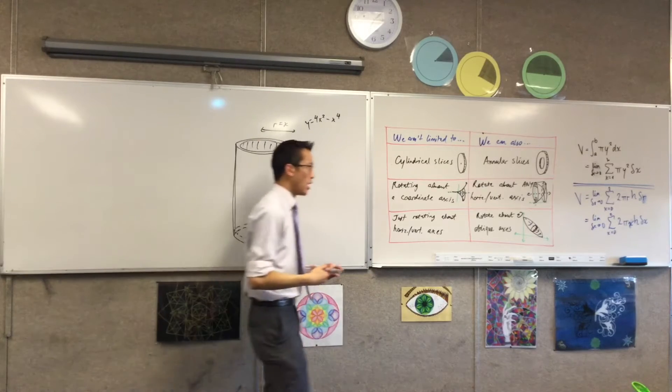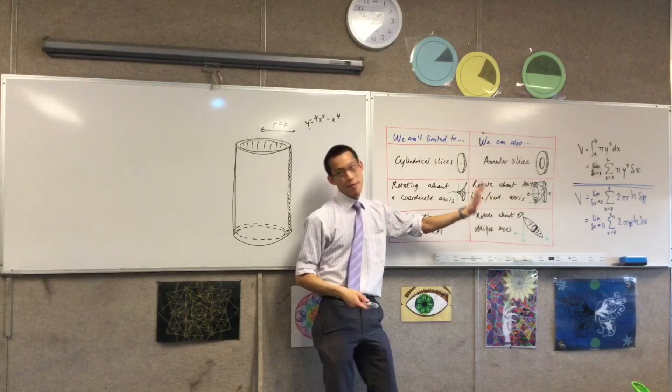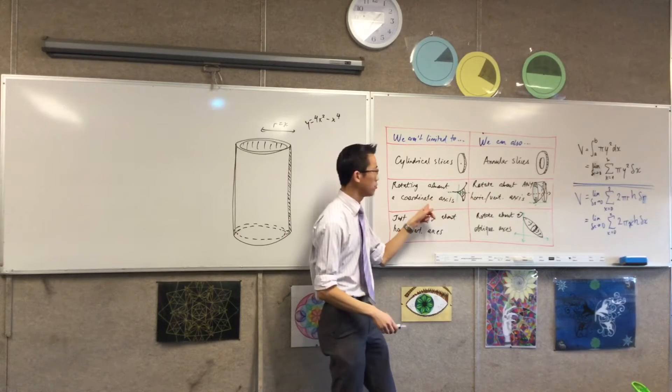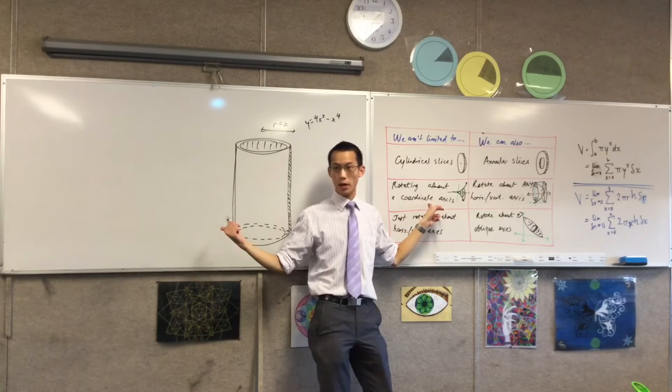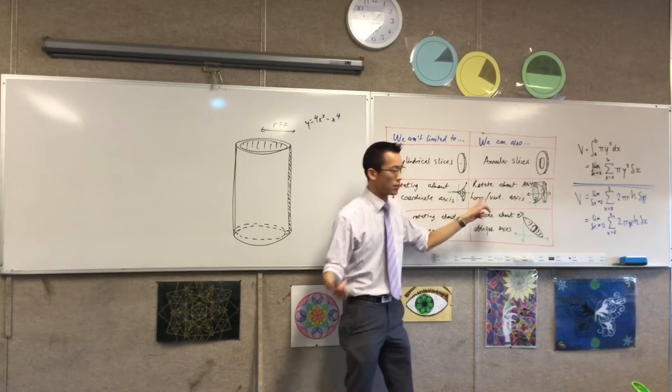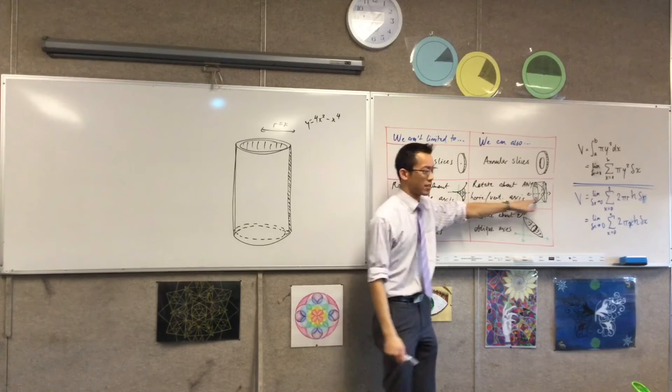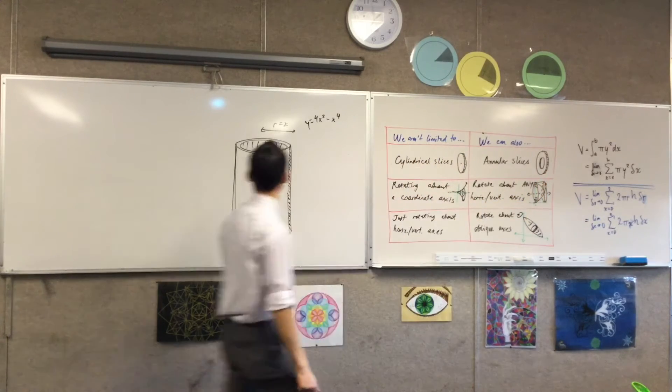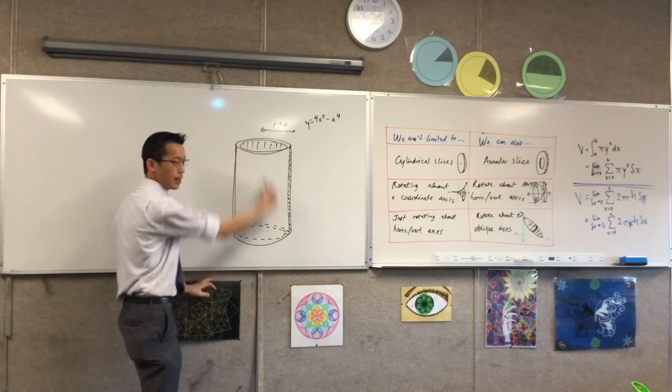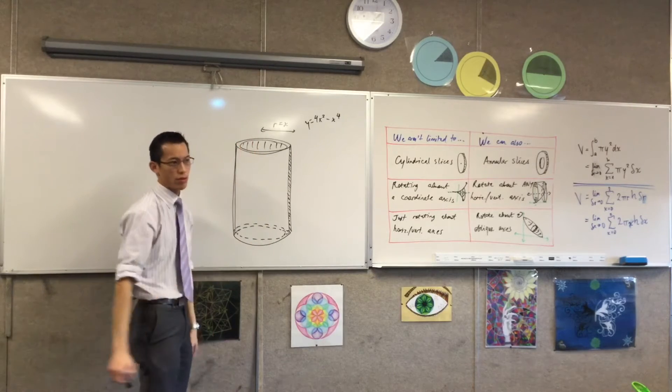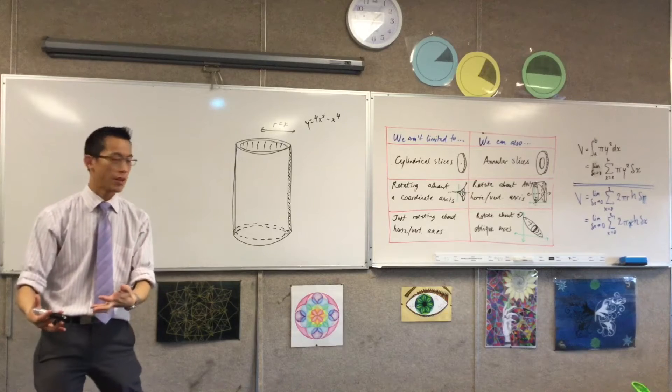Now just keep in mind, like we saw before, it might not be quite that simple. Suppose you were not rotating about the y-axis like we were here. Suppose you were rotating around something off to the edge. So for instance, if the axis here was not x equals zero, suppose it was x equals two.